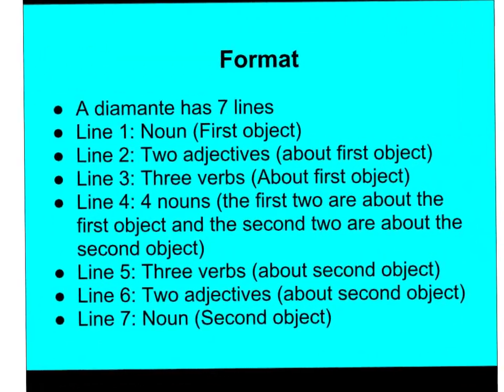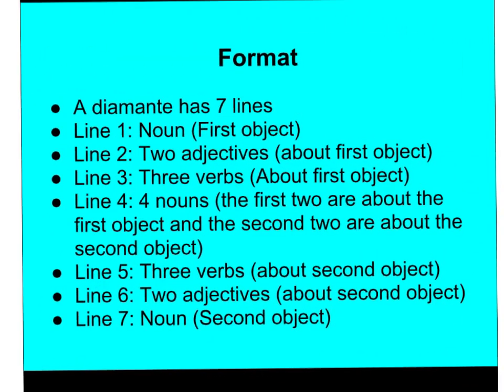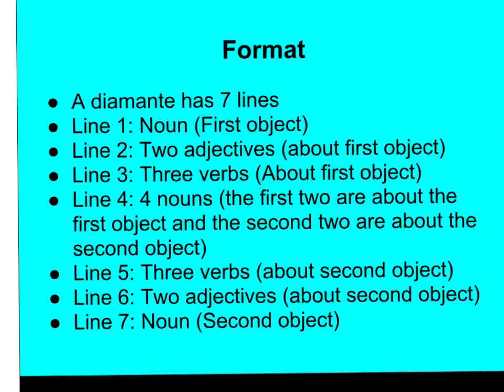Format: A diamante has seven lines. Line one is a noun — it's your first object that you're going to choose. Line two has two adjectives about the first object. Line three has three verbs about the first object. Line four has four nouns: the first two are about the first object and the second two are about the second object.